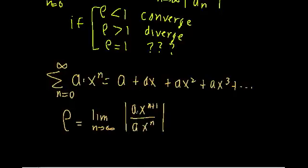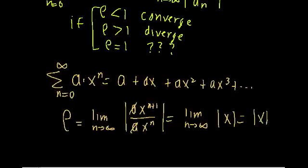Now let's simplify this up a bit. The a terms will cancel. The x^{n+1}, that's the same thing as just x^n times x. So we can say that x^n will cancel. And we're left with the limit as n approaches infinity of just x. And because there's no n term, we can just say that this whole thing here is just equal to x.